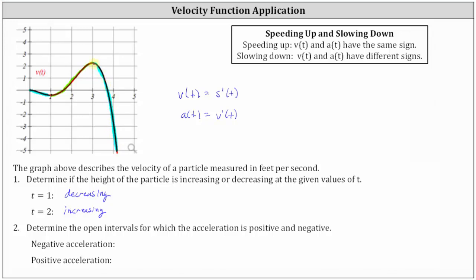So where the velocity function is decreasing, the acceleration function is negative. Notice how, if we were to sketch tangent lines to the velocity function where the function is decreasing, the slopes of the tangent lines would be negative, and the slopes of the tangent lines represent the acceleration function values. Where the velocity function is increasing, the slopes of tangent lines are positive, and those slopes are acceleration function values. So the acceleration is negative over the open interval from zero to one, union the open interval from three to infinity, and the acceleration is positive over the open interval from one to three.